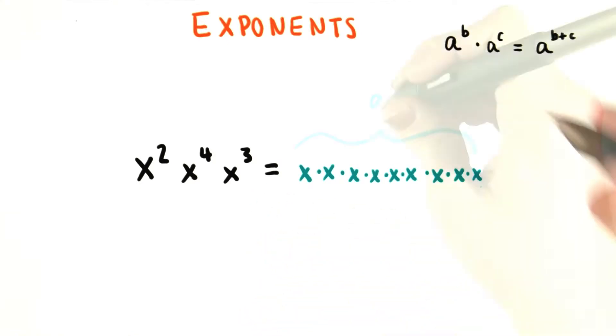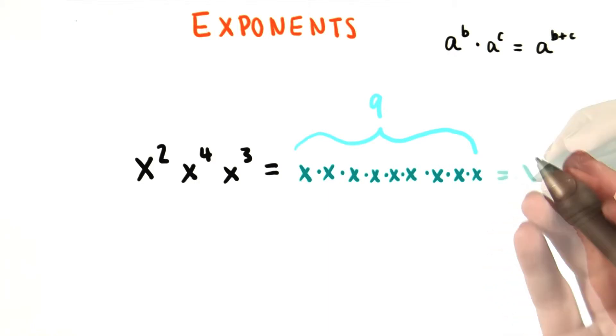So in total here, we have nine x's all multiplied together. And we know that this just equals x to the ninth power.